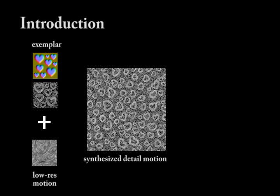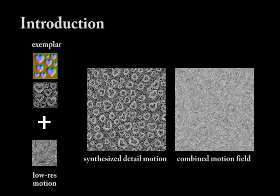In this example, the input exemplar is a heart-shaped image from which we derive the input motion by the curl operator. The low-resolution field is produced by fluid simulation. The synthesized detailed motion field is then combined with the low-resolution motion field.